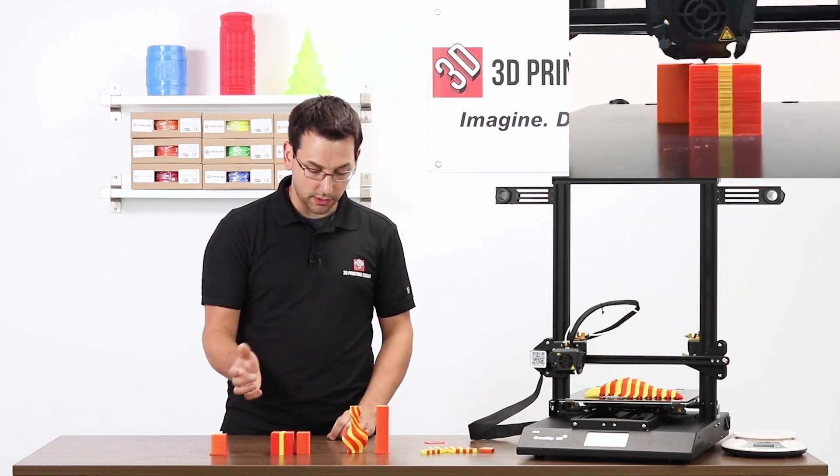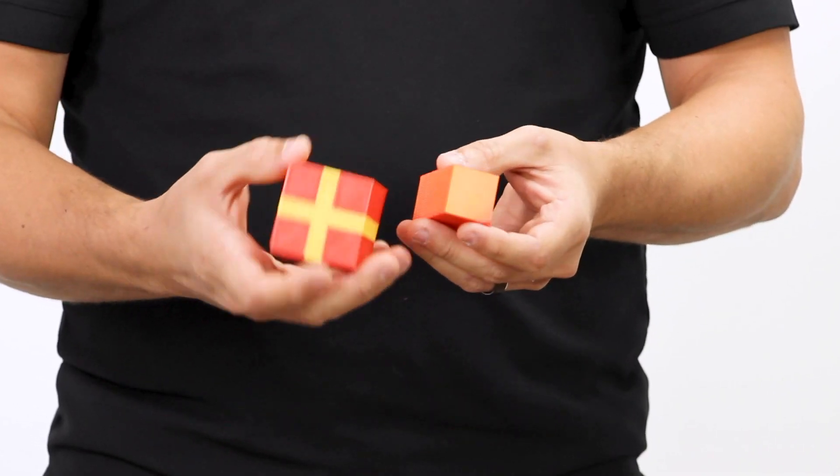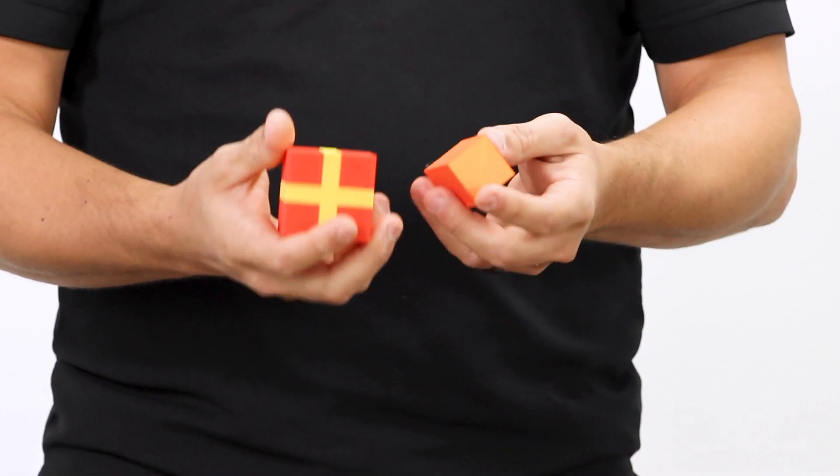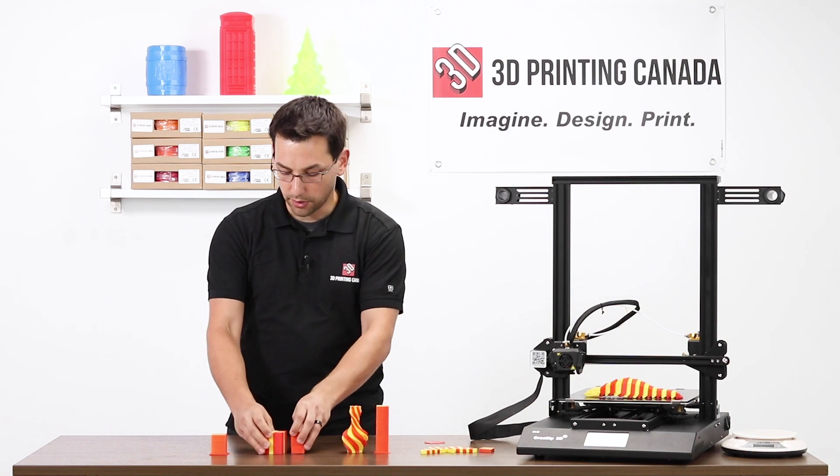And again, purge block equal in height. In this case, because the item's a little bit stouter or wider if you will, they're about equal.